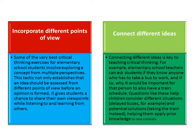Number five: connect different ideas. Connecting different ideas is key to teaching critical thinking. For example, elementary school teachers can ask students if they know anyone who takes a bus to work, and why it would be important for that person to also have a train schedule. Questions like these help students consider different situations — such as delayed buses — and potential solutions like taking the train, applying prior knowledge to new contexts.